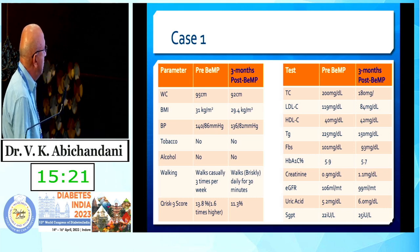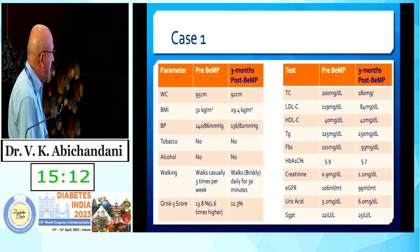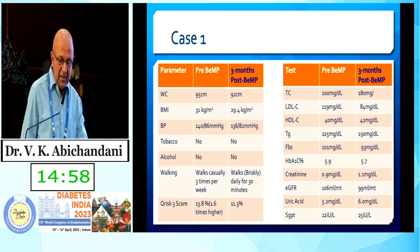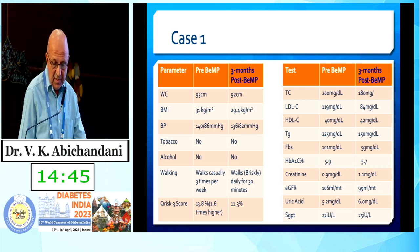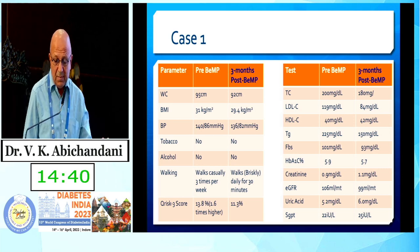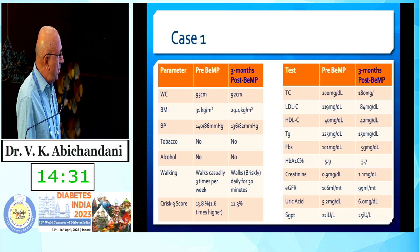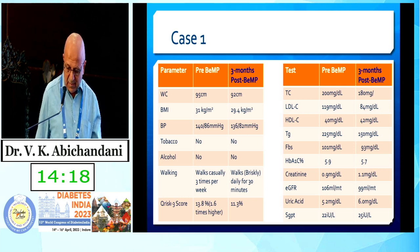Following certain parameters — waist circumference and BMI — both improved largely because of lifestyle adherence. BP remained within desirable levels. She had never used tobacco or alcohol. She used to walk occasionally, maybe three times per week earlier, but after initiation of Bempedoic Acid she started walking briskly daily for 30 minutes. Her QRISK3 score came down from 13.8% to 11.3%. Total cholesterol, LDL cholesterol, and triglycerides all came down very handsomely compared to baseline. HDL marginally improved. Fasting sugars and HbA1c showed some correction. SGPT remained largely unaltered. Creatinine and uric acid were mildly elevated with a small drop in eGFR, but clinically non-significant.